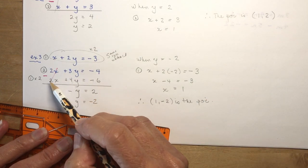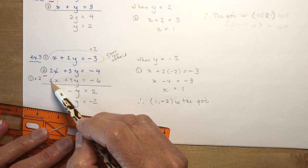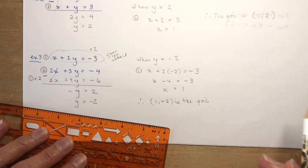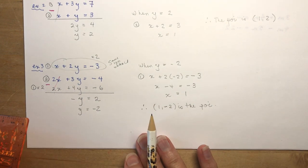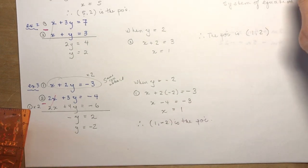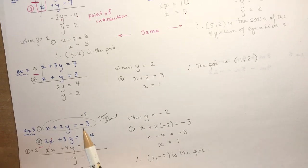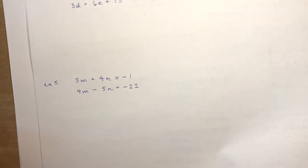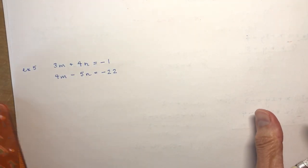Now substitute y = −2 back to find x. Using equation 1: x + 2(−2) = −3, so x − 4 = −3, and x = 1. Therefore the point of intersection is (1, −2). To do this I had to multiply one of the equations — and that's okay, as we discussed at the beginning of the lesson.